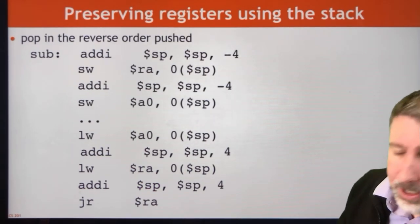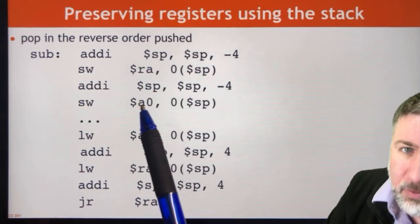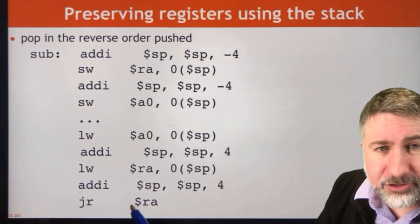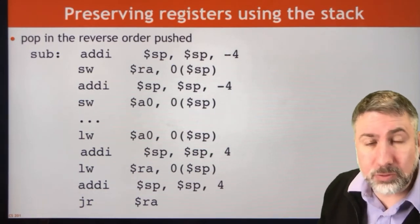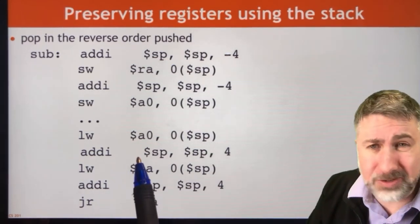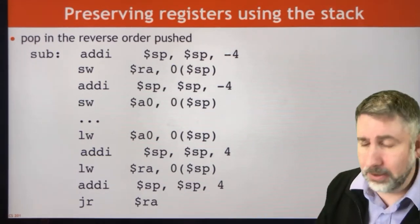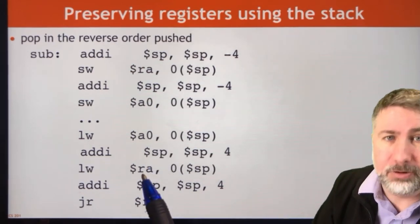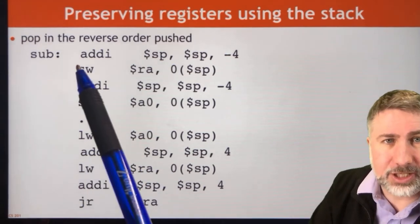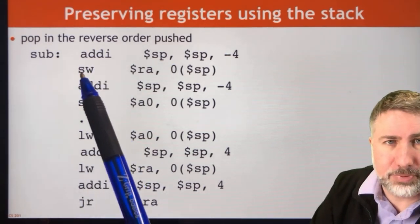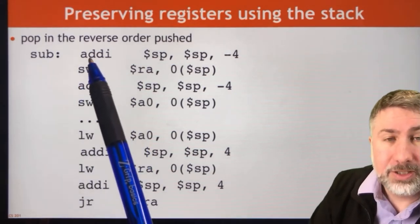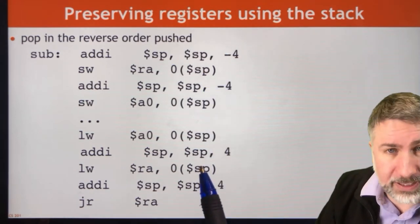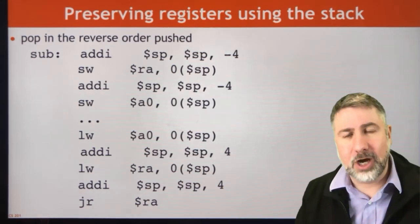For example, if we wanted to push the return address and register A0, we can push them onto the stack. Then at the end of the procedure, just before the JRRA, we return those values to the registers we pushed them from in the opposite order, because the stack is last in, first out. So if we push the return address and then A0, at the end of the procedure we pop A0 and then the return address. The push subtracts a value from the stack pointer first and then stores a value; the pop returns the value and then adds to the stack pointer — they are opposite operations of each other.